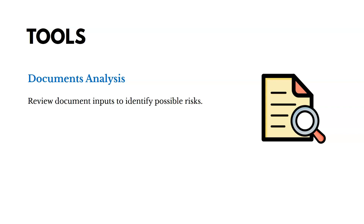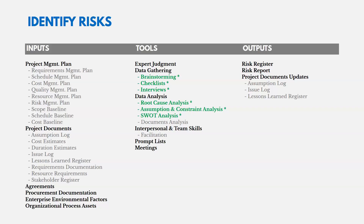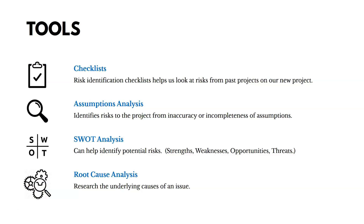Some tools for identifying risks include document analysis — reviewing document inputs to identify possible risks. You also have checklists: risk identification checklists that look at risks from past projects and apply them to the new project. You walk through the checklist asking, 'Could this be a risk for us now?' for each item.